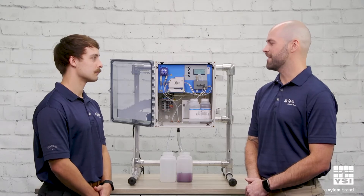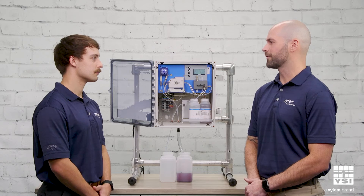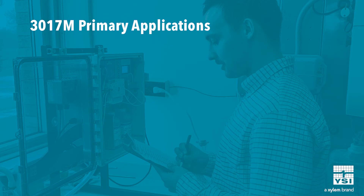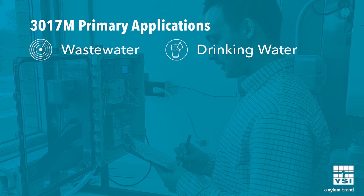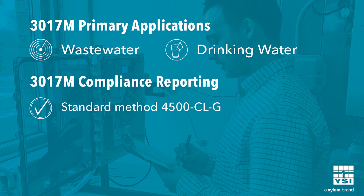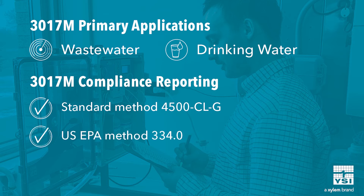The 3017M is EPA approved for reporting in drinking water and wastewater applications. It follows Standard Method 4500 CLG, US EPA Method 334, and is ISO compliant following Method 7393-2.